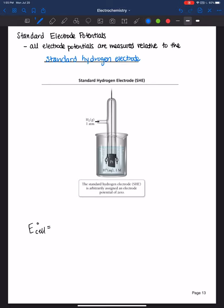This standard hydrogen electrode is arbitrarily assigned an electrode potential of zero. When you're asked to calculate the cell potential, it could be either voltaic or electrolytic depending on if it's spontaneous or non-spontaneous. The formula you need to learn is cathode minus anode.